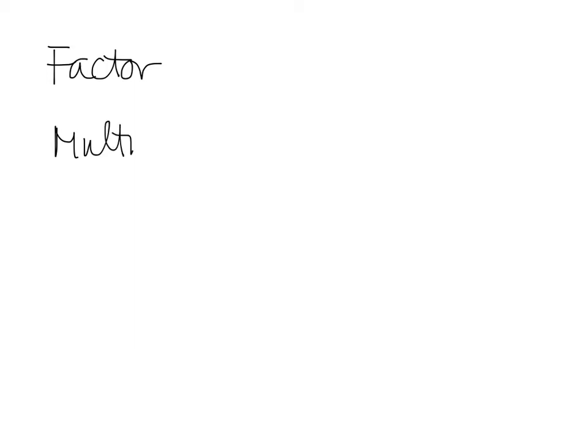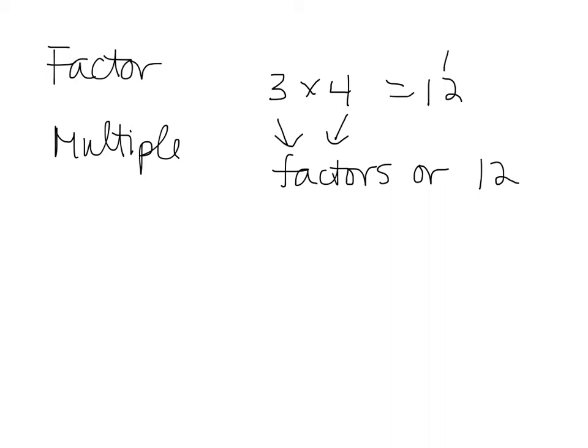They are related, and you most of all need to know the difference. So let's just take an example. If I say 3 times 4 is 12, then 3 and 4 are factors of 12. Also though, 12 is a multiple of both 3 and 4.